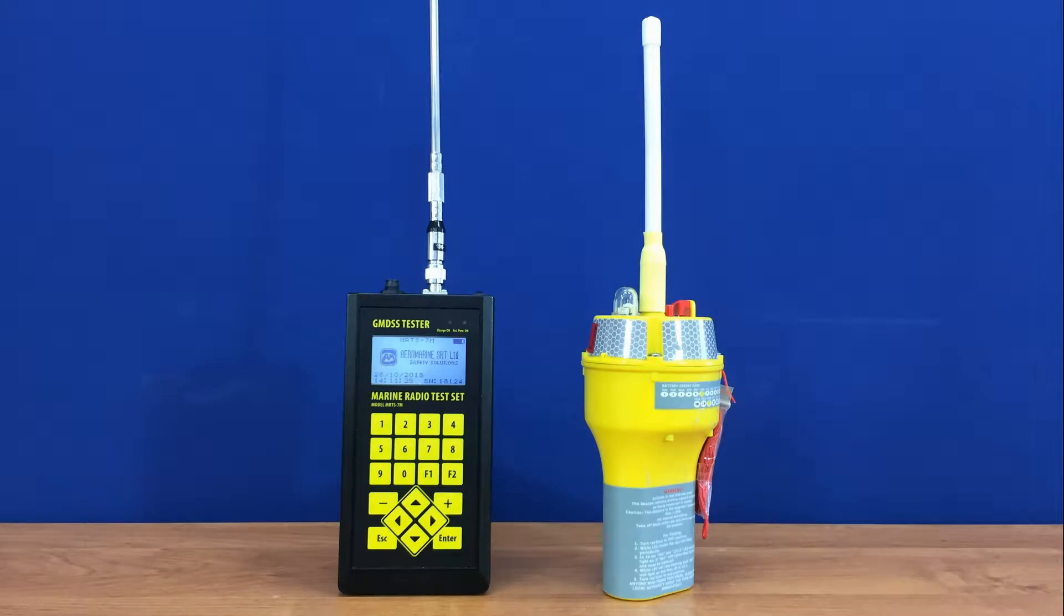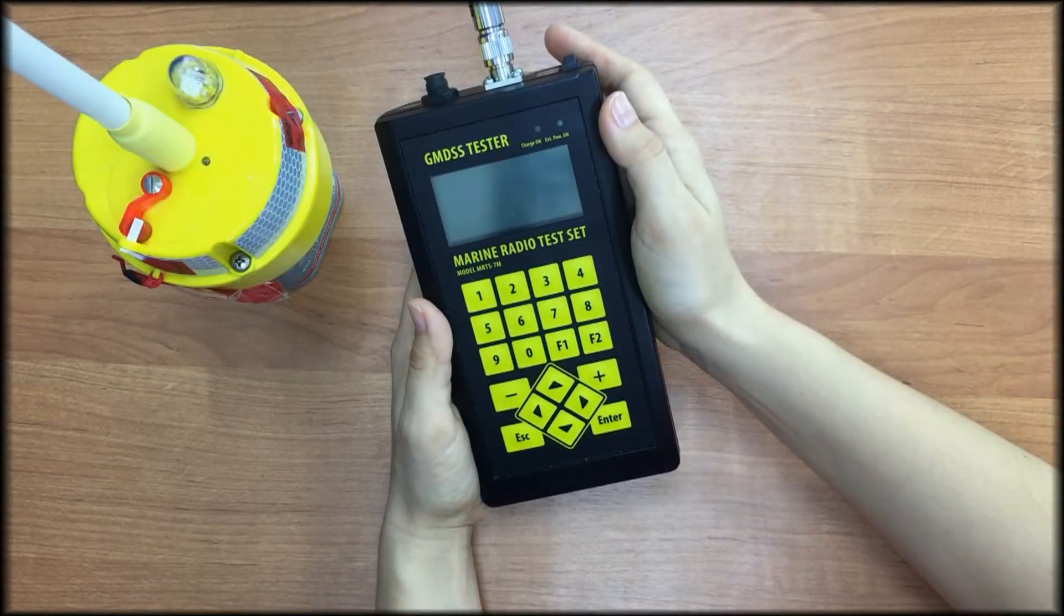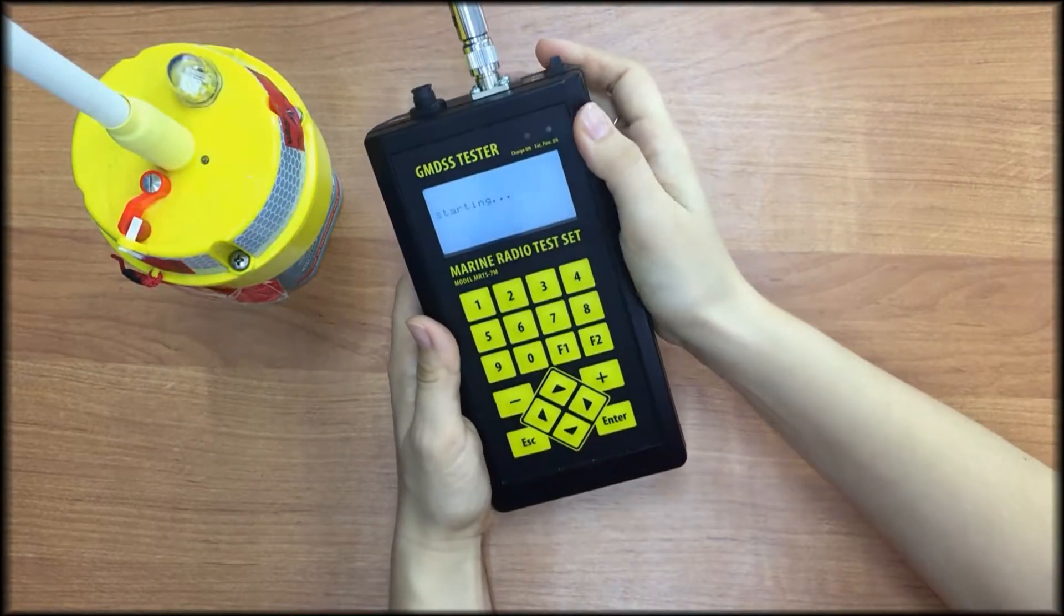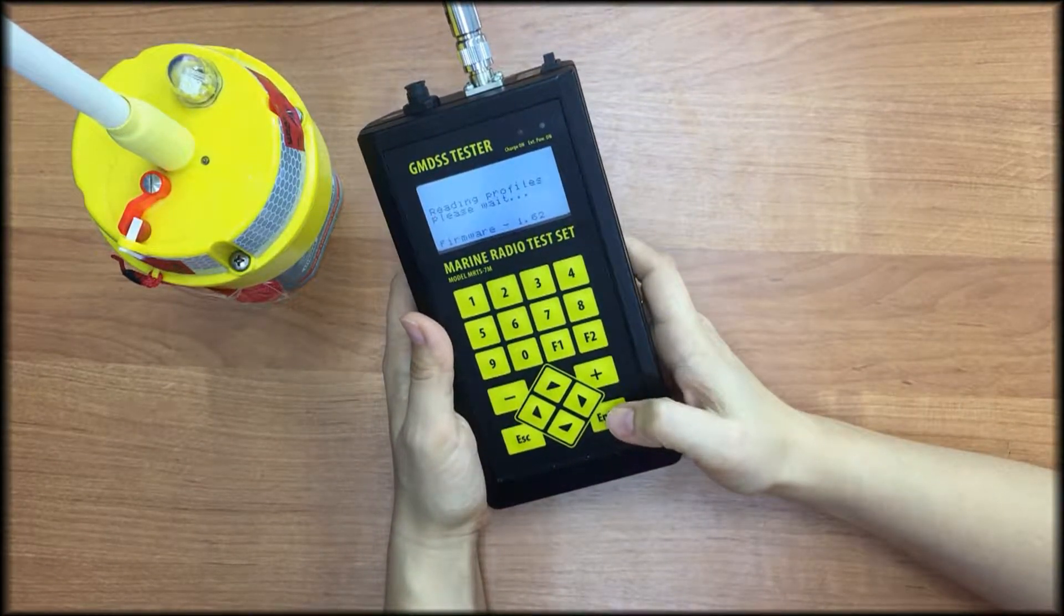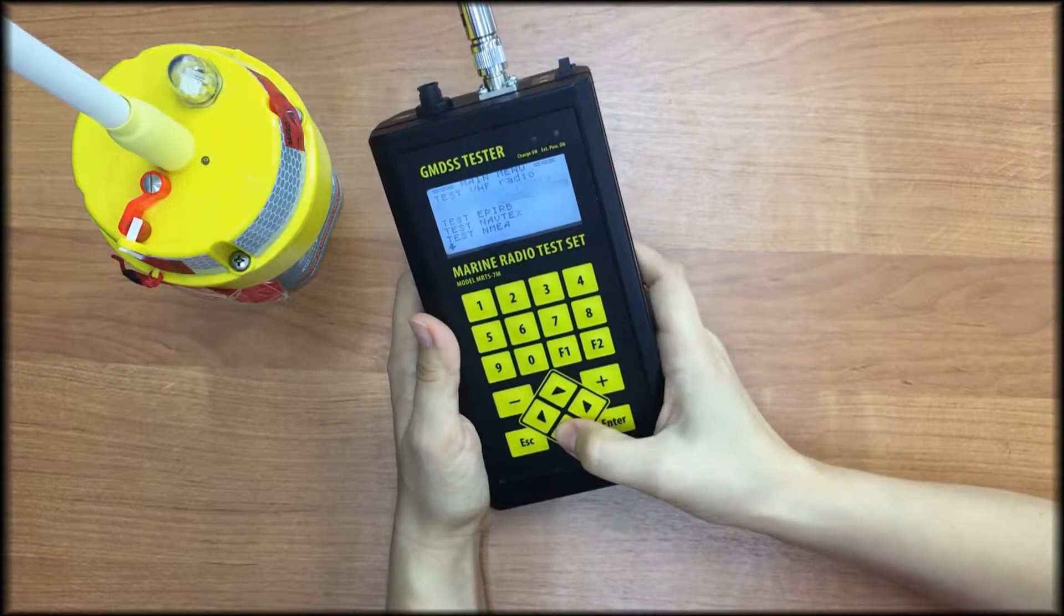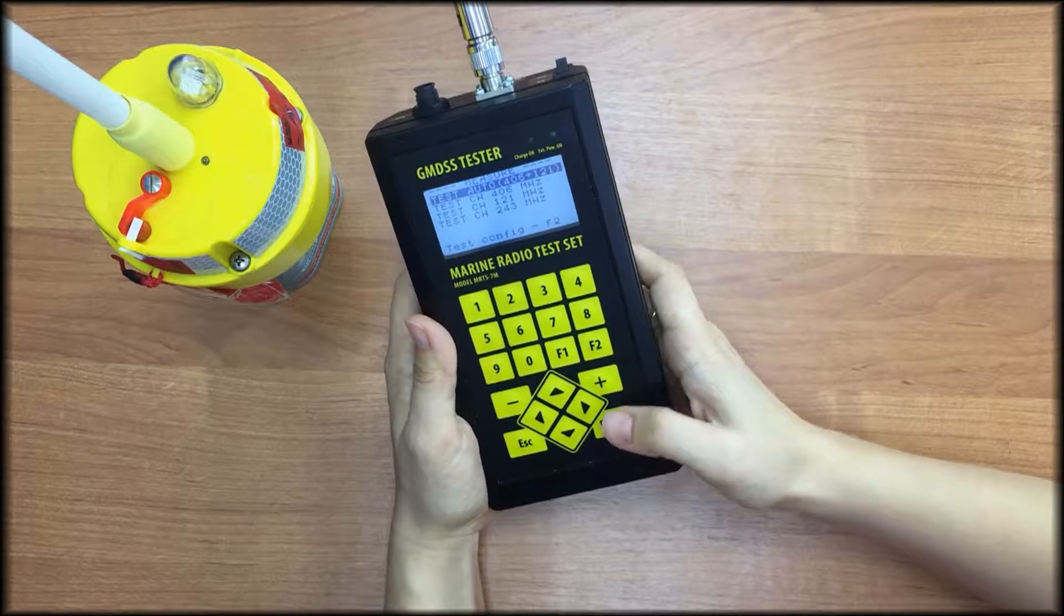Then start the testing by MRTS-7N. First, let's turn on our tester and switch it to proper test mode. We go to test menu, select test E-PIRB and we may select auto test mode.